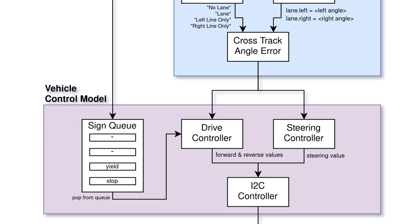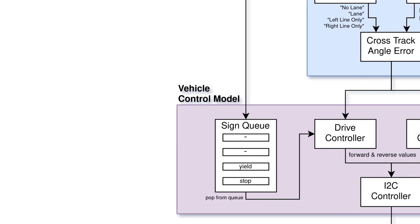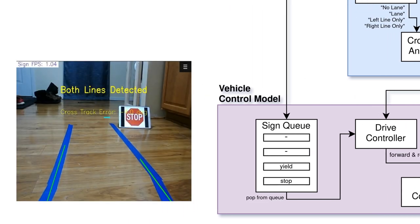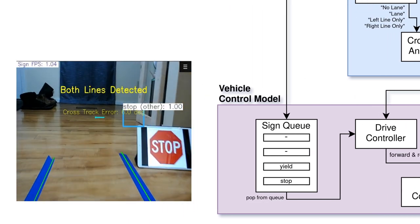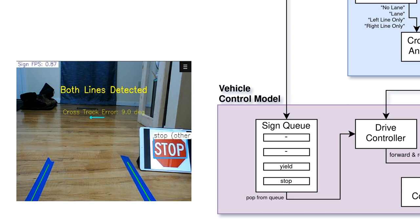The vehicle control model contains the decision making for controlling the vehicle. We use the lane error we got from the lane model to proportionally control the steering and driving. The signs we get from our sign detection model are pushed to a queue and handled by the drive controller. Currently, we are only reacting to stop signs. If a stop sign is detected, the drive controller outputs a drive value, which stops the vehicle.